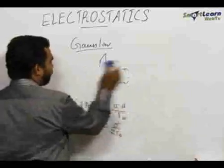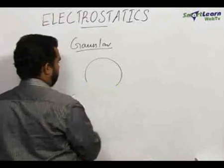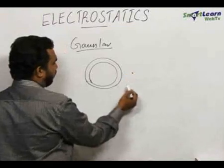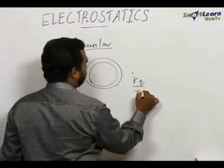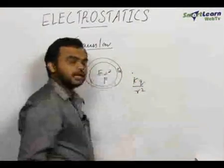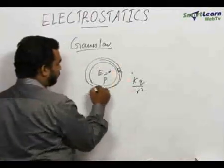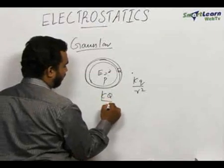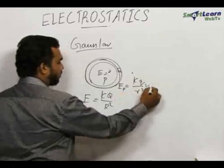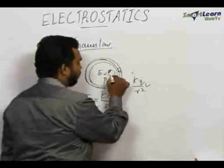Similarly, we can find the value of electric field due to a shell. At an outside point, the electric field is k q by r squared, where q is the charge on the shell. At an inner point, the electric field is zero, because any Gaussian surface inside does not enclose any charge. On the surface of the shell, the electric field is also k q by r squared, where r is the radius.